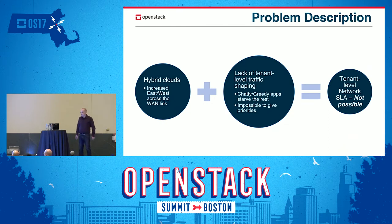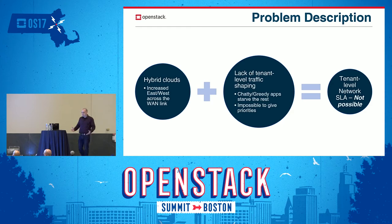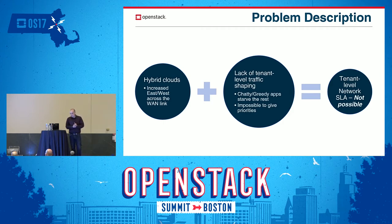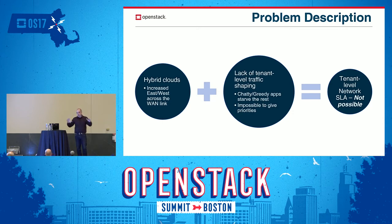A little bit of the problem description. This subject is a little misunderstood, and there are a lot of ideas about what it actually means. What we see today is more and more hybrid clouds, where a hybrid cloud is basically every cloud where you also have external services. Even if your organization is using Gmail or some other kind of software service, then it's already considered a hybrid cloud. What we see is there is an increase in east-west communication across the WAN links, which results usually in more cost, together with basically the lack of tenant-level traffic shaping.